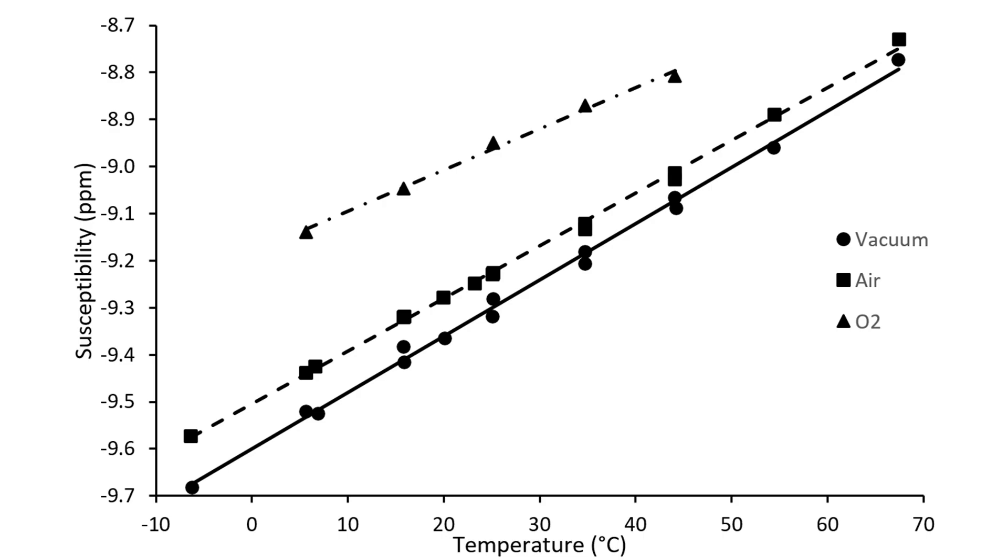Oxygen in the air is paramagnetic. And as it dissolves in solvents, it changes their magnetic susceptibility. Here we have the susceptibility of deuterochloroform as a function of temperature and partial oxygen pressure.